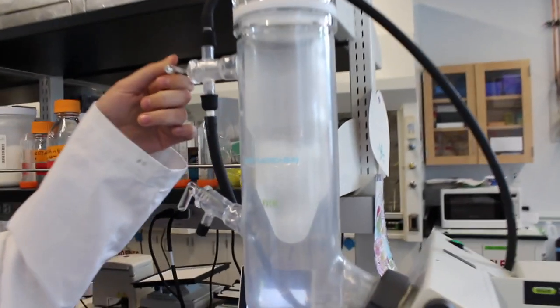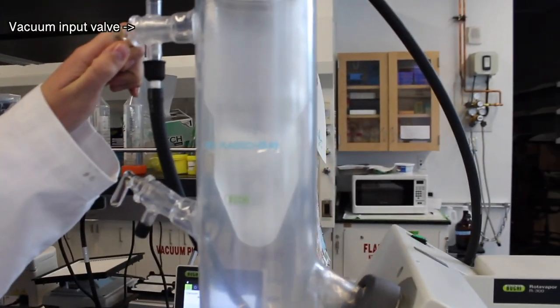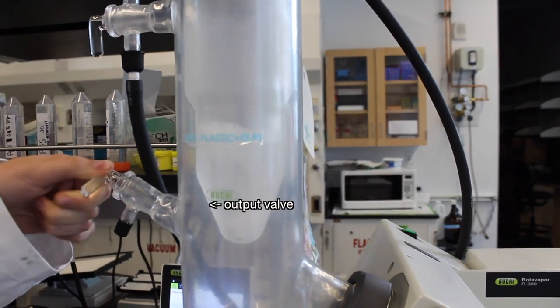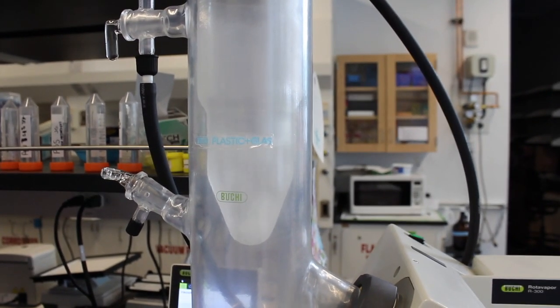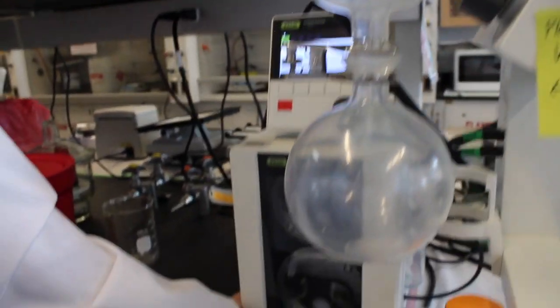Start by first turning the vacuum input valve to allow airflow through the tubing from the pump. Next, turn the output valve to close the system from the atmosphere. Now turn the vacuum pump on.